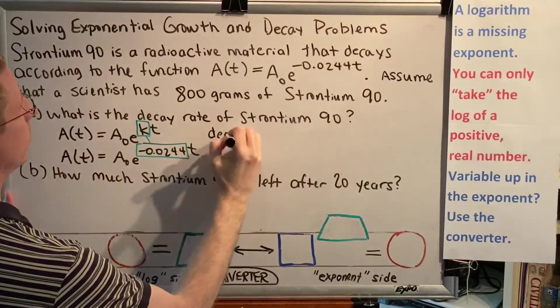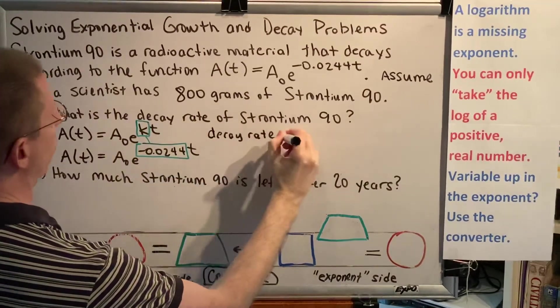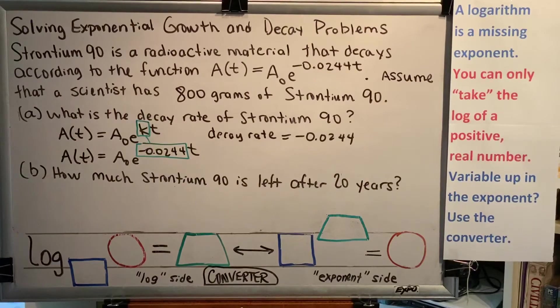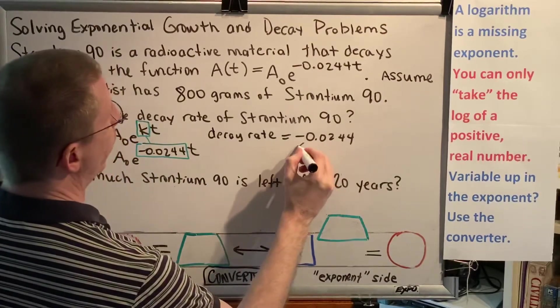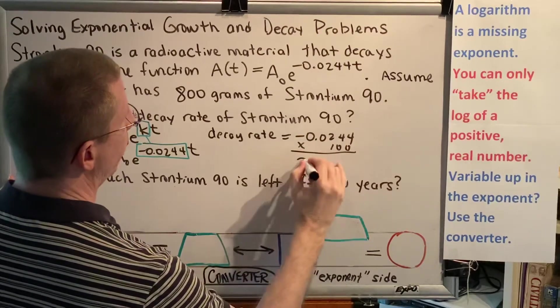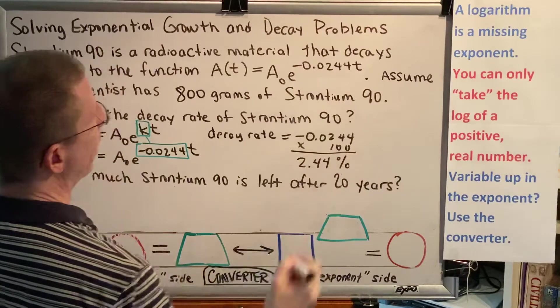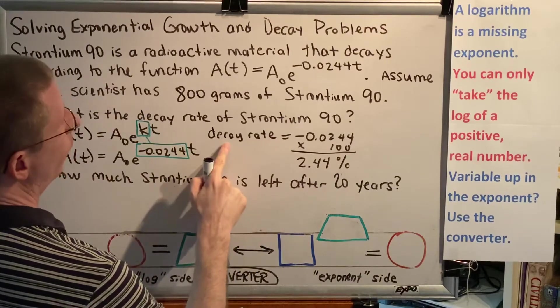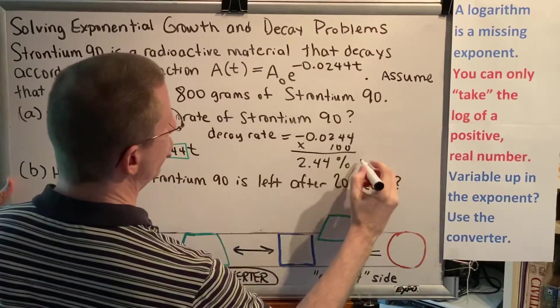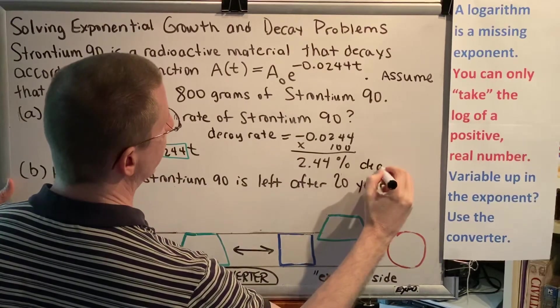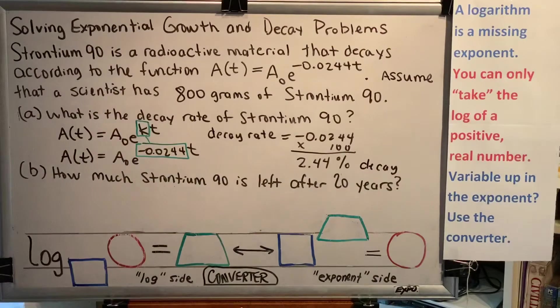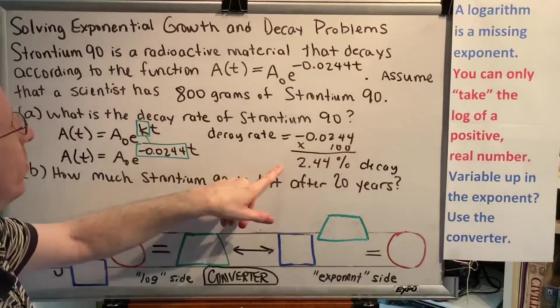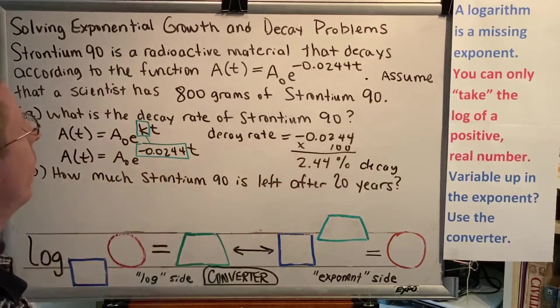So the decay rate equals negative 0.0244. Now whenever we talk about rates, we convert them to a percent. So we have to multiply this by 100, and this is going to give us 2.44%. Now you might notice that I dropped the negative. The reason why I dropped the negative is because the negative is indicative of decay. So when someone asks you for the decay rate, we would say that it's 2.44% decay. The software platform that you're using to answer homework questions will be very specific in the instructions about whether they want the word decay or simply a negative in front of the percent value. So read those instructions very carefully.